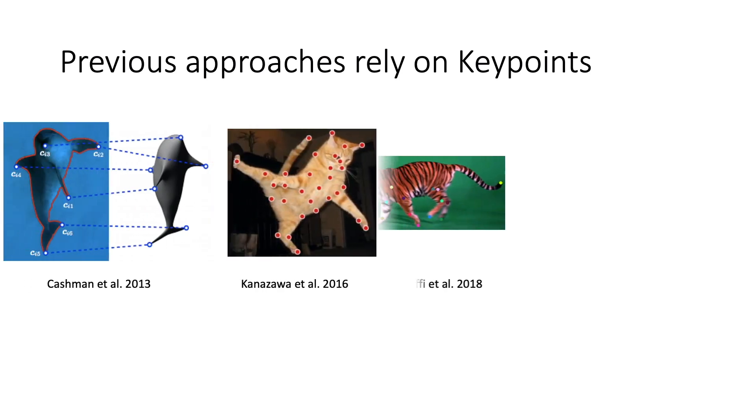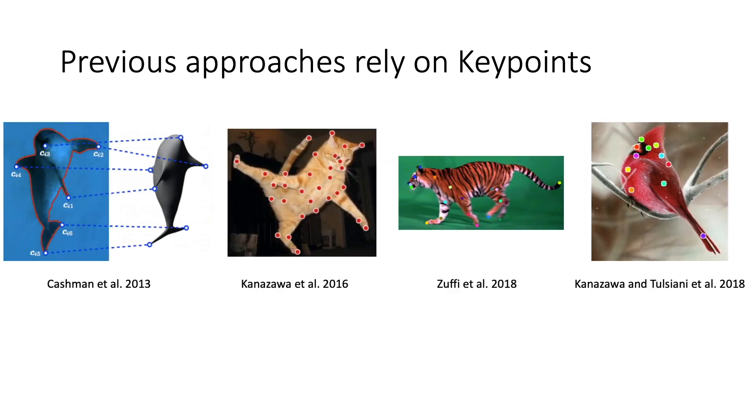There are a number of previous approaches that tackle the same problem of learning a morphable shape model without ground truth 3D supervision, but they use key point and other supervision.